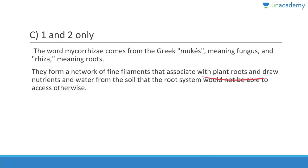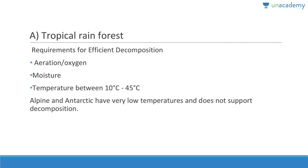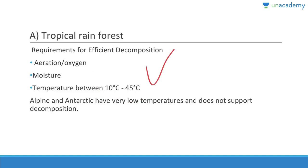Question twenty-two: The process of decomposition is fastest wherever there is high temperature, more moisture, and more air (oxygen). Answer is A, tropical rainforest. Requirements for efficient decomposition include aeration (oxygen), moisture, and temperature between 10 to 45 degrees Celsius. In alpine or Antarctic regions the very low temperature does not support decomposition. Question twenty-three: Which of the following statements about DDT is correct? It is a non-degradable pollutant — that is correct. It is dichlorodiphenyltrichloroethane.